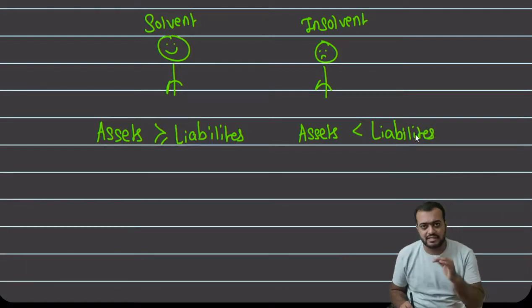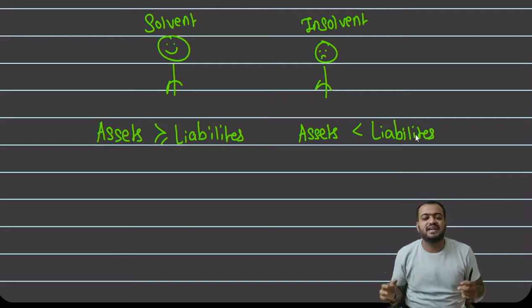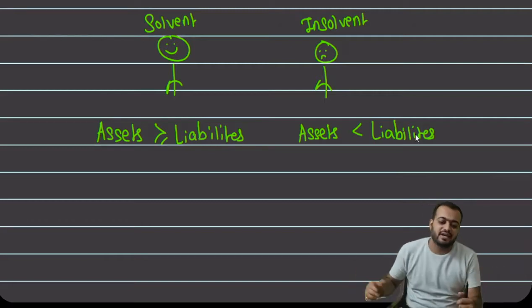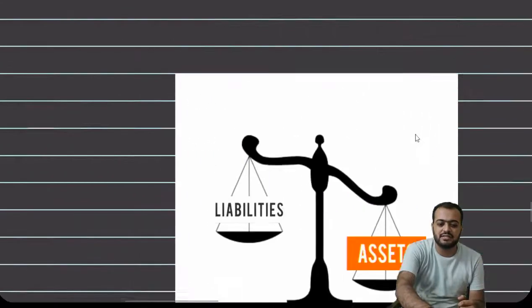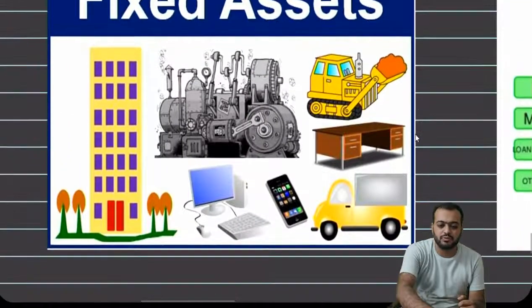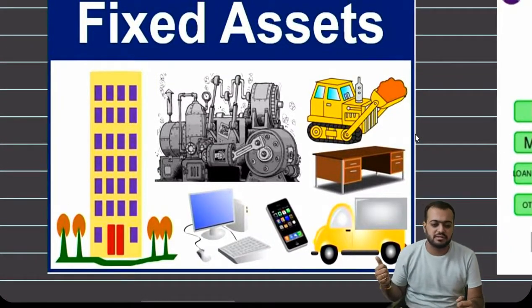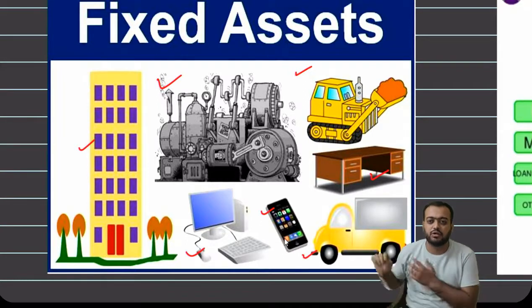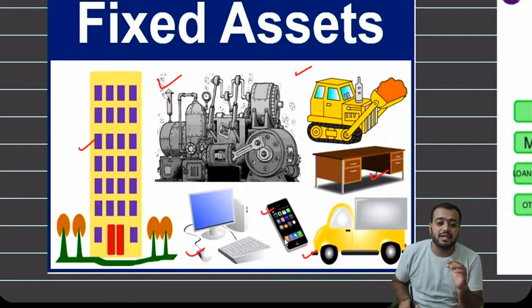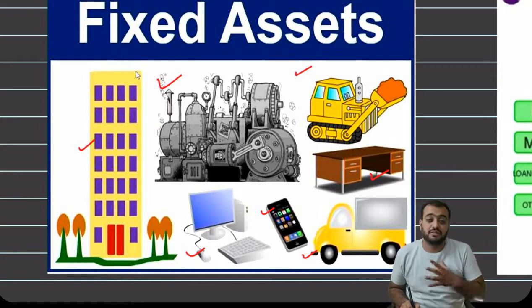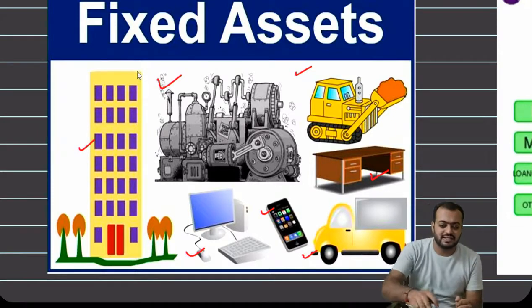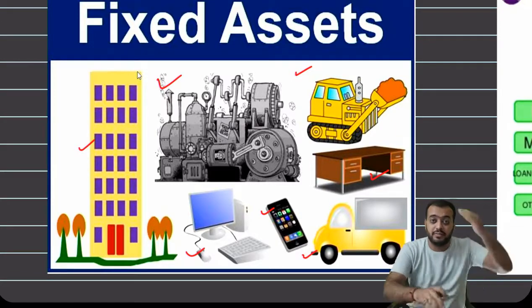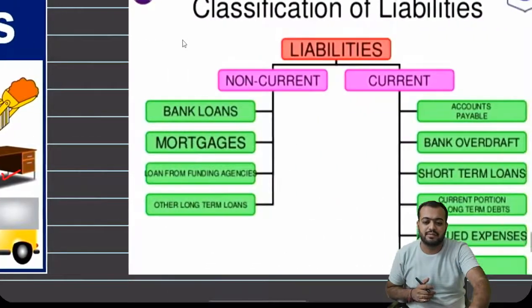Assets और liabilities का मतलब क्या है? इसके लिए हम separate video बनाने वाले हैं, लेकिन short में बताते हैं example के साथ। Asset मतलब — मेरे पास गाड़ी है, बंगला है, shares हैं — ये जो भी है, ये अपनी asset है, अपनी property। जिस चीज़ पर अपनी ownership होती है उसे asset बोलते हैं। और अपने ऊपर कर्ज़ा है, किसी को पैसा देना है — उसे बोलते हैं liability।